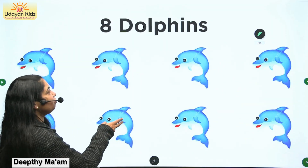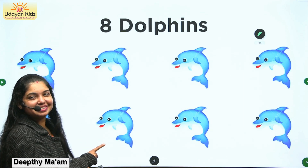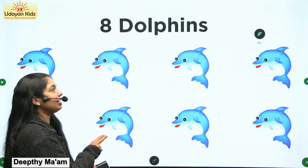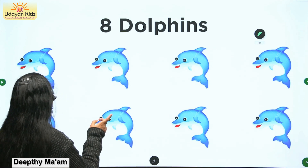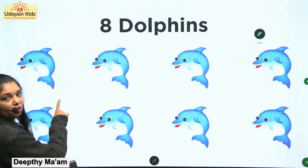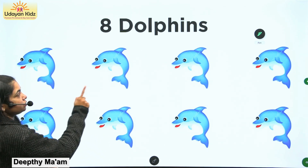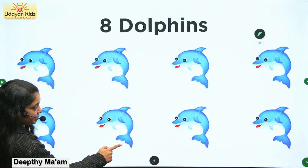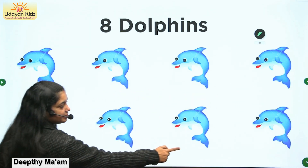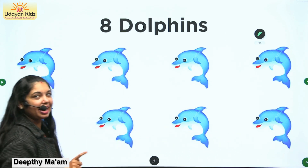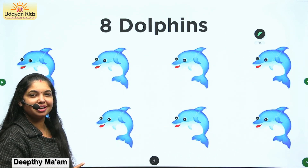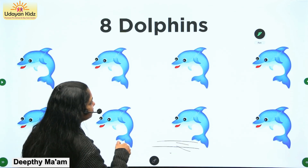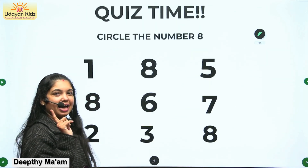Do you know what are these? These are dolphins. Dolphins are very friendly. So count the dolphins. One, two, three, four, five, six, seven, eight. Eight dolphins! How many dolphins are there? Eight dolphins.